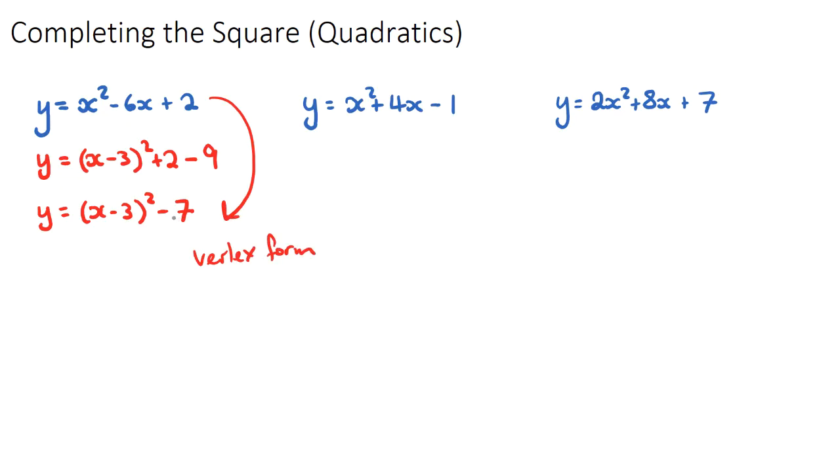And if it's in this form here, the vertex, which is another word for turning point, of this quadratic is just going to be the opposite number to negative three. So it'll be three, comma, and then whatever the constant on the outside is, negative seven. This is our vertex of this quadratic.